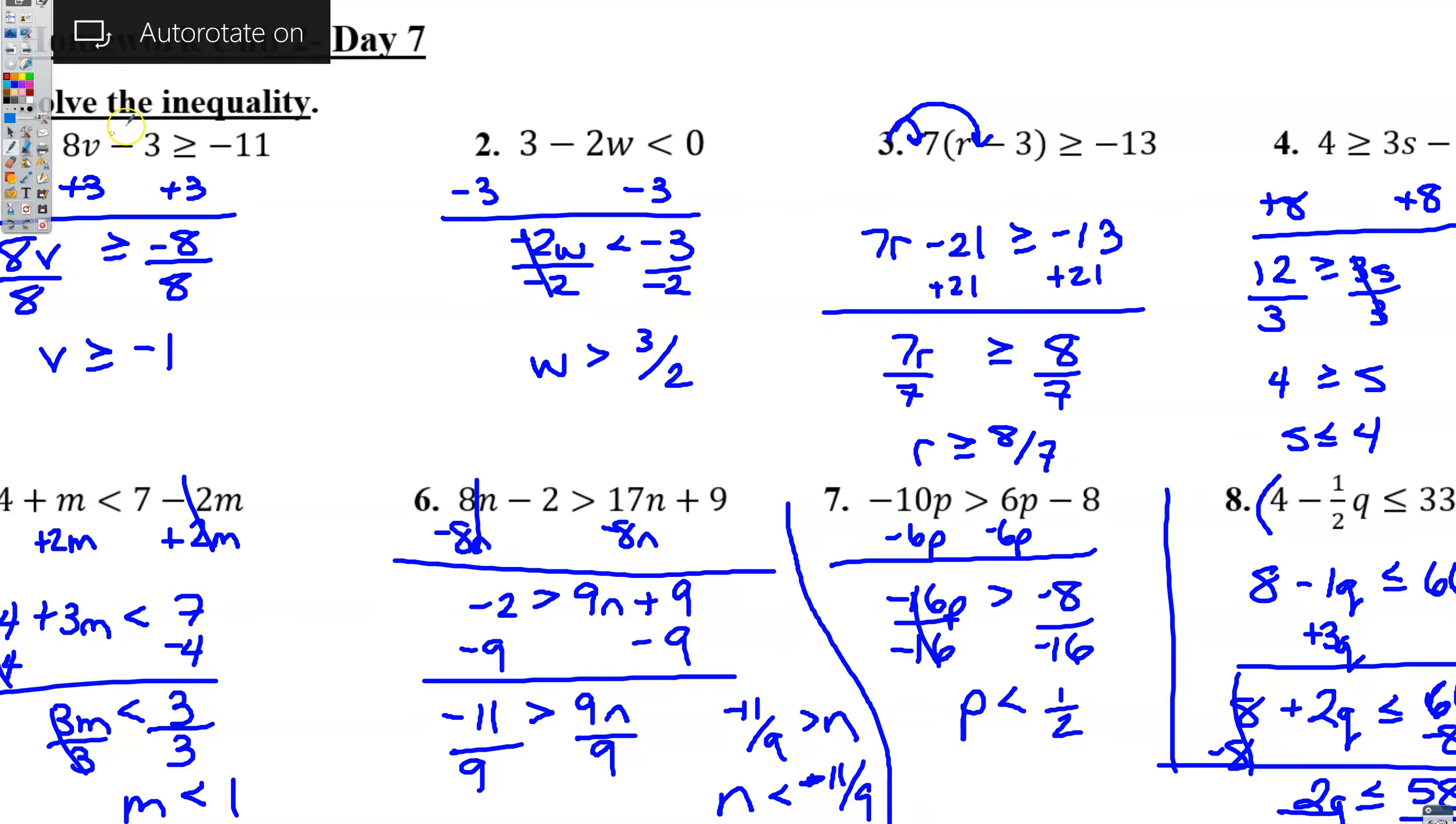On the first one, you're supposed to be solving for v. The idea is to get v by itself. So in the first step, the work got a little off from the problem, but the first step you're getting rid of this minus three, so you add three to both sides. Whatever you do on one side you also do on the other side. That cancels out these threes. We're left with 8v is greater than or equal to negative 8, because negative 11 plus 3 is negative 8.